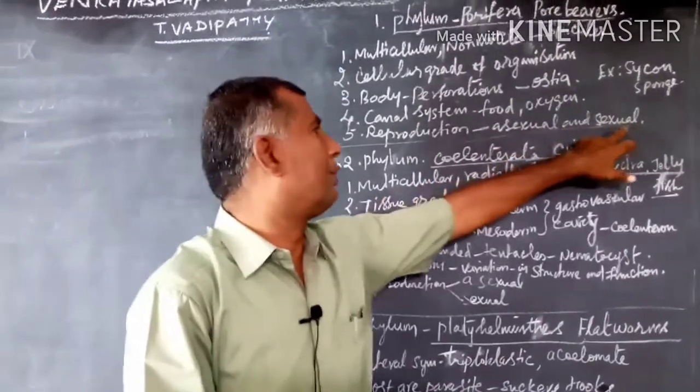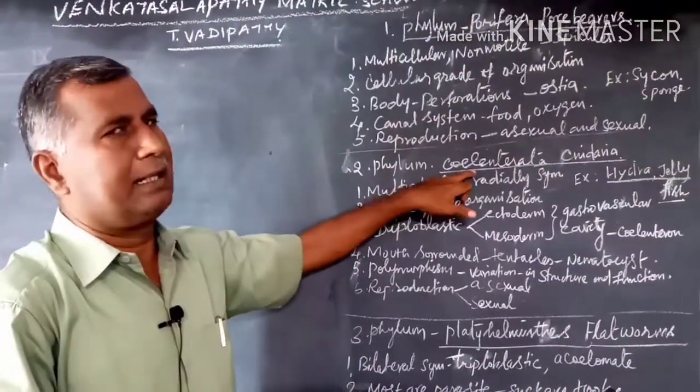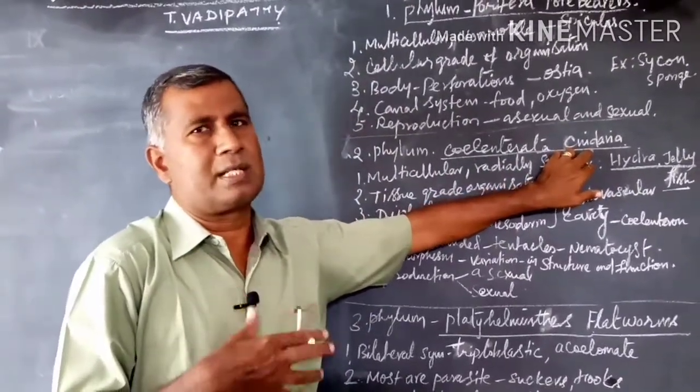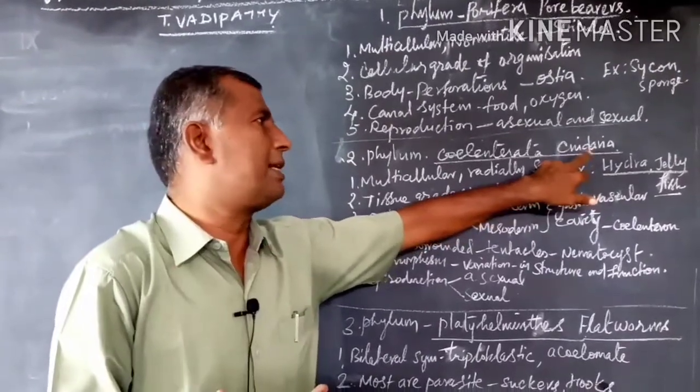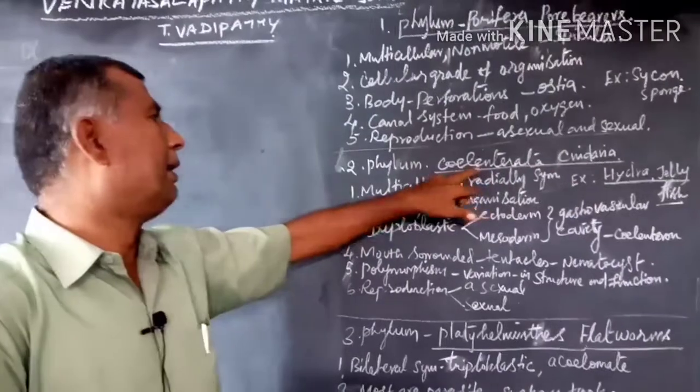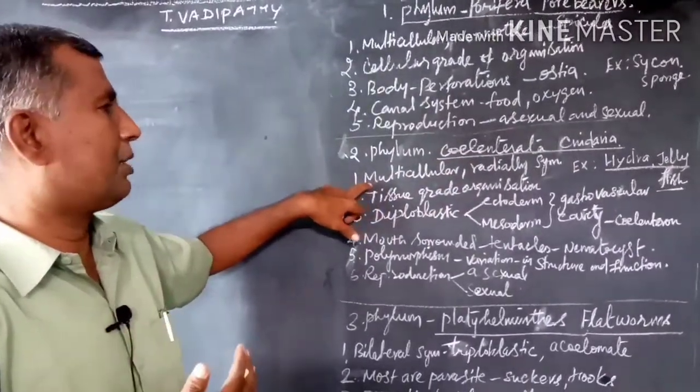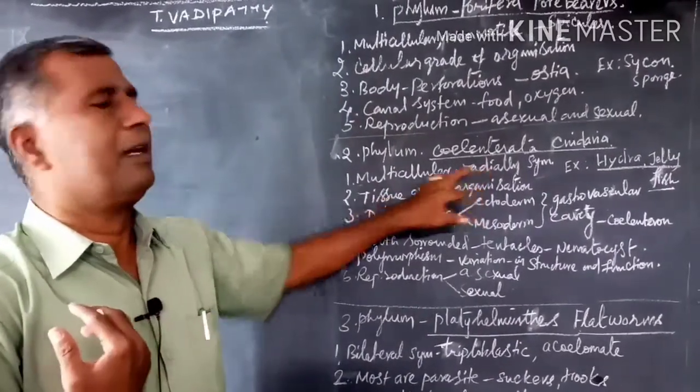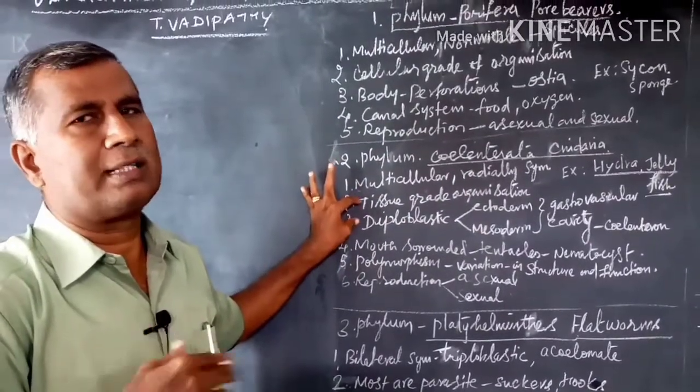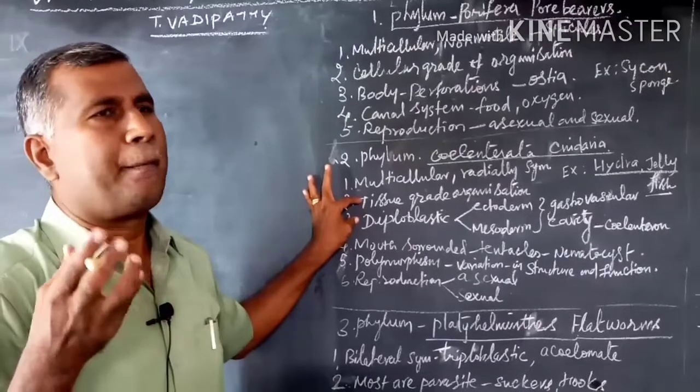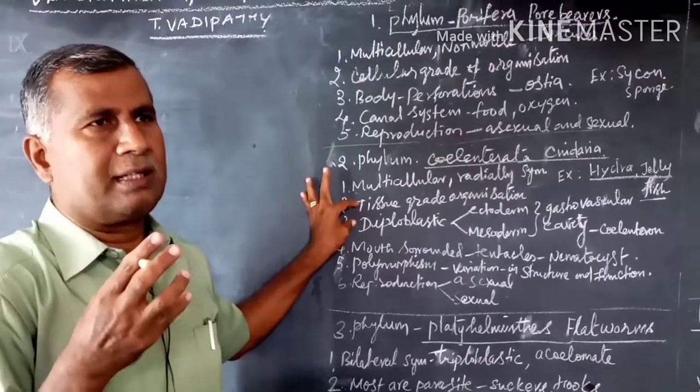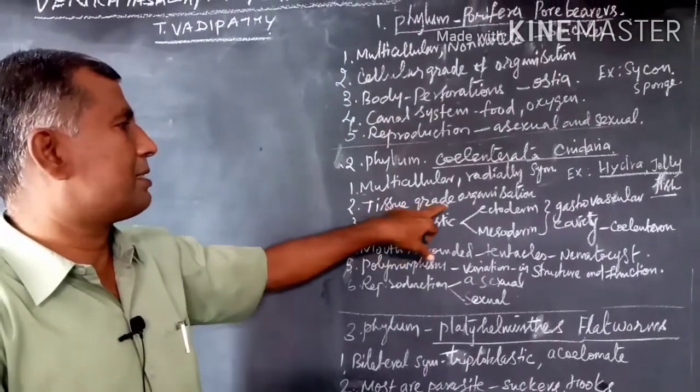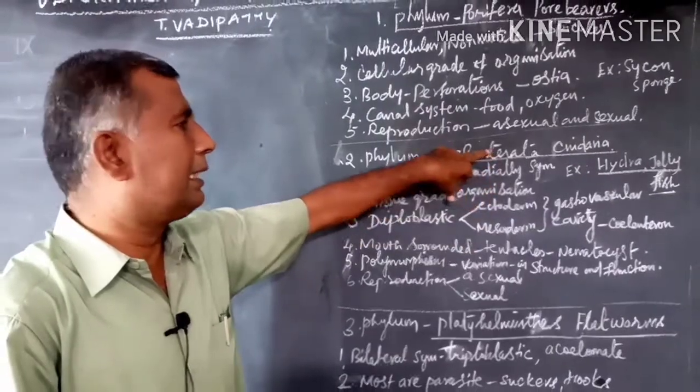The second phylum is Coelenterata, otherwise known as Cnidaria, because they have nematocysts or cnidoblasts, stinging cells. They are also multicellular, having radial symmetry. First tissue grade organization – a tissue is a group of cells of different structure and origin but doing the same function. First tissue grade organization is exhibited in Coelenterata.